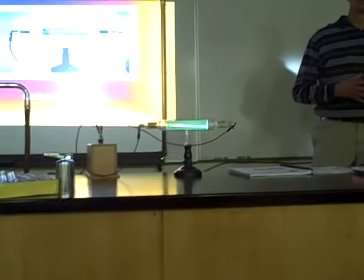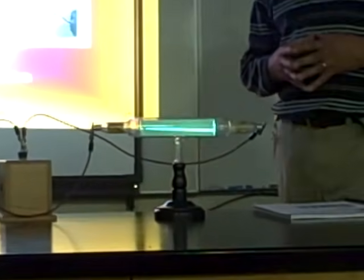Looks like a nice straight line, doesn't it? We call that a cathode ray because it emanates or begins at the cathode and shoots across over to the anode.